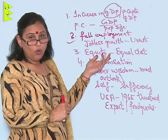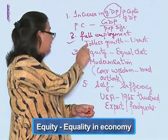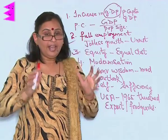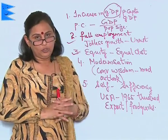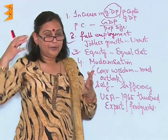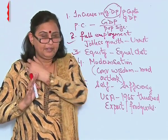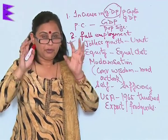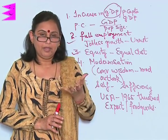The third goal is equity. Equity means equality in the economy — that is, the share of profit is divided equally amongst all individuals. Of course, it cannot happen that a labourer and a doctor start getting equal amounts of money. But it means that the person who has put in effort gets a good share of the economic growth.